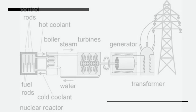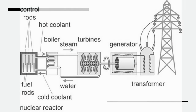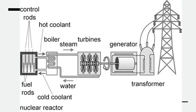Bringing back our original power station diagram, we can see on the left-hand side the control rods and the fuel rods — these are our nuclear reactor producing heat. We place water into the reactor, which comes back out as steam. We use the steam to turn the turbines, and the turbine spins the generator, giving us electricity.